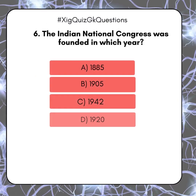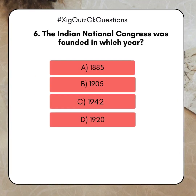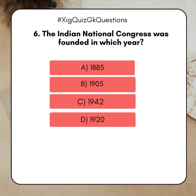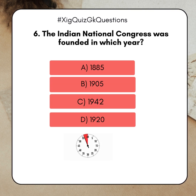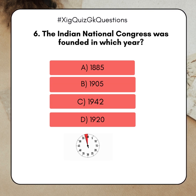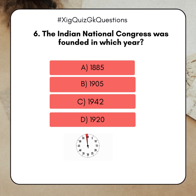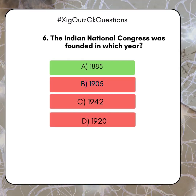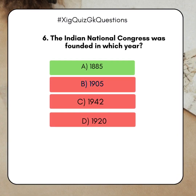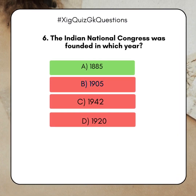The Indian National Congress was founded in which year? A. 1885. B. 1905. C. 1942. D. 1920. Answer: A. 1885.